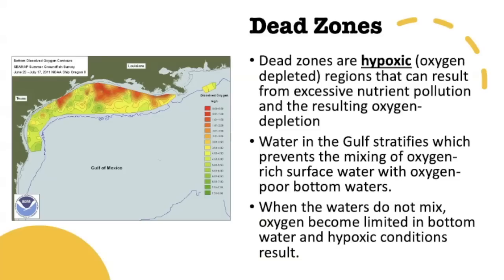When eutrophication is particularly bad, dead zones can form. A famous dead zone forms in the Gulf of Mexico most summers as a result of nutrients washed from the Mississippi River watershed toward the Gulf near Louisiana. Dead zones are hypoxic areas where nitrogen and phosphorus chemicals have caused algae to grow, decompose, and use up all the oxygen in the water. In summer, the Gulf water stratifies — it separates into hot and cold layers — preventing mixing of oxygenated water with hypoxic water, leaving deeper bottom waters completely devoid of oxygen.